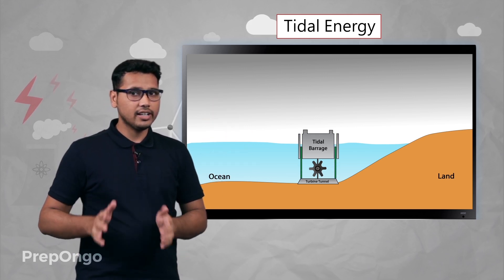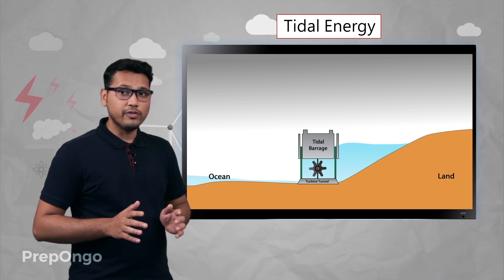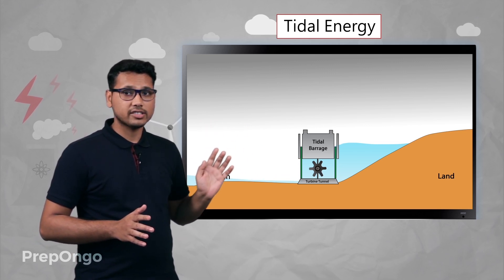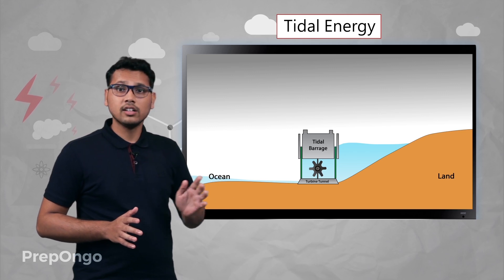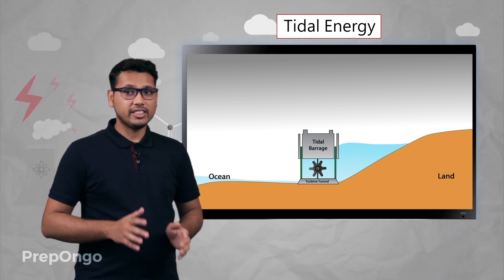Then when there is a low tide, we have a high water head on the reservoir side and low water head on the ocean side. So when there is a low tide, we again open the gates.